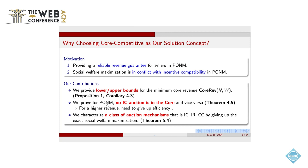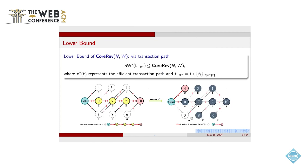This means that the IC property and the core property are not consistent with each other. So if we want to optimize the seller's revenue in this new market, we need to give up the efficiency allocation requirements. So we characterize a class of auction mechanisms, and these mechanisms are proved to be IC/IR and core competitive.